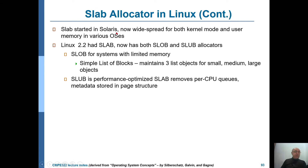The slab allocator originated in Solaris — the idea was first introduced there. Starting with Linux 2.2, the slab allocator began being used, but in Linux kernel 2.6 there are also SLOB and SLUB allocators. SLOB stands for Simple List of Blocks and maintains three different sizes of objects. SLUB is very similar to slab but rather than having per-CPU queues, it stores metadata in the page structure itself. We will not go into the details of these.